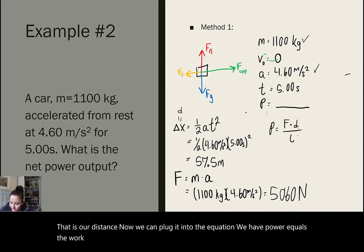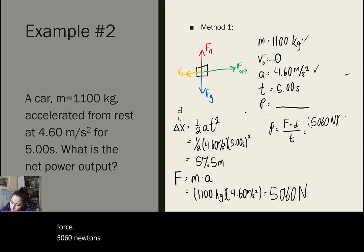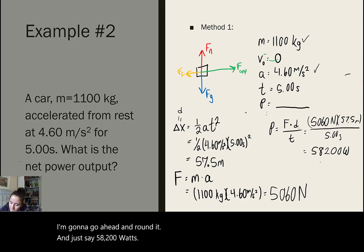Now, we can plug it into the equation. We have power equals the work, aka the force times distance, over the time. So we have the force, 5,060 newtons, times the distance that force was applied for, 57.5 meters, divided by the time, 5.00 seconds. And we plug that into our calculator. I'm going to go ahead and round it and just say 58,200 watts. Another way you could represent that is 58.2 kilowatts. Again, just dividing by a thousand and moving that decimal over.